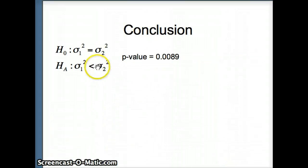So we have our H0 and our HA, we have our p-value. Our p-value is 0.0089. That is a small p-value. And what do we know? Since the p-value is small, we reject H0.